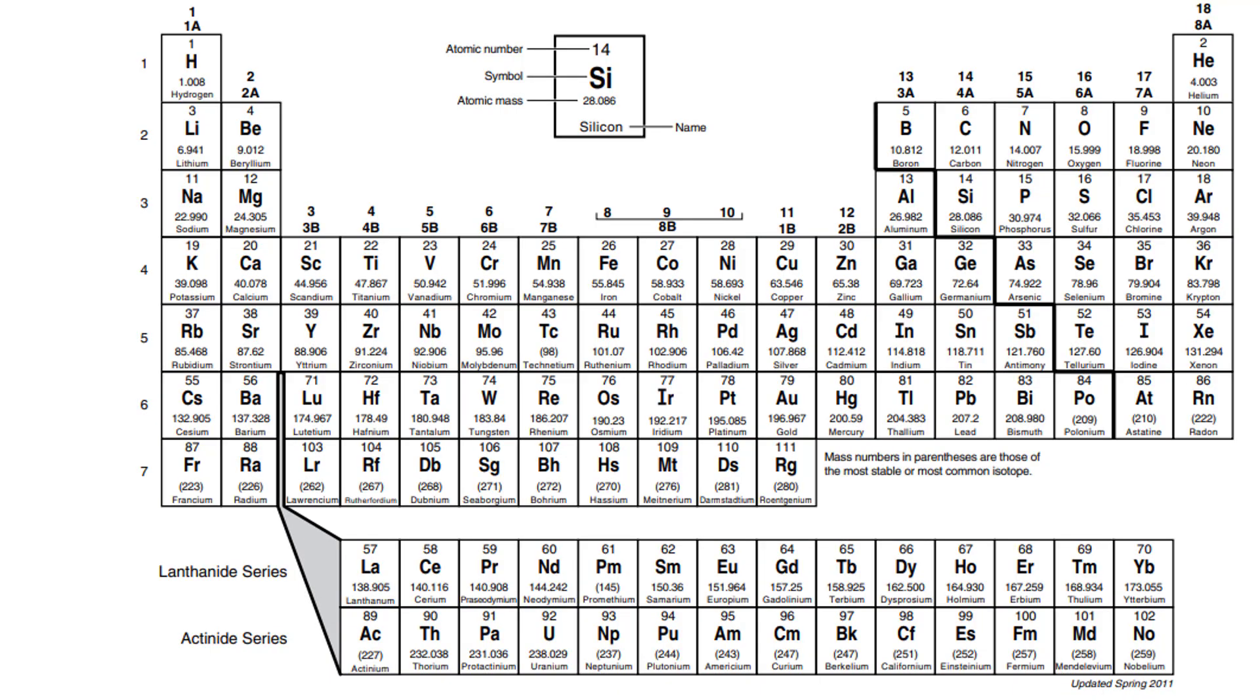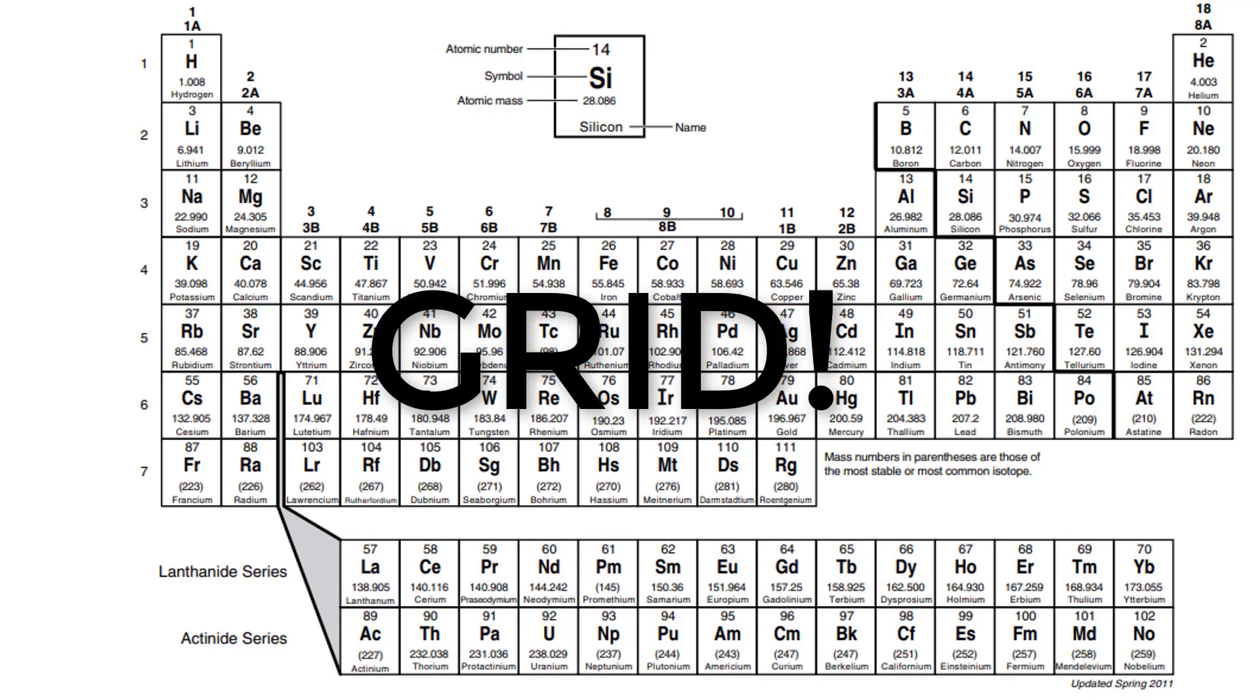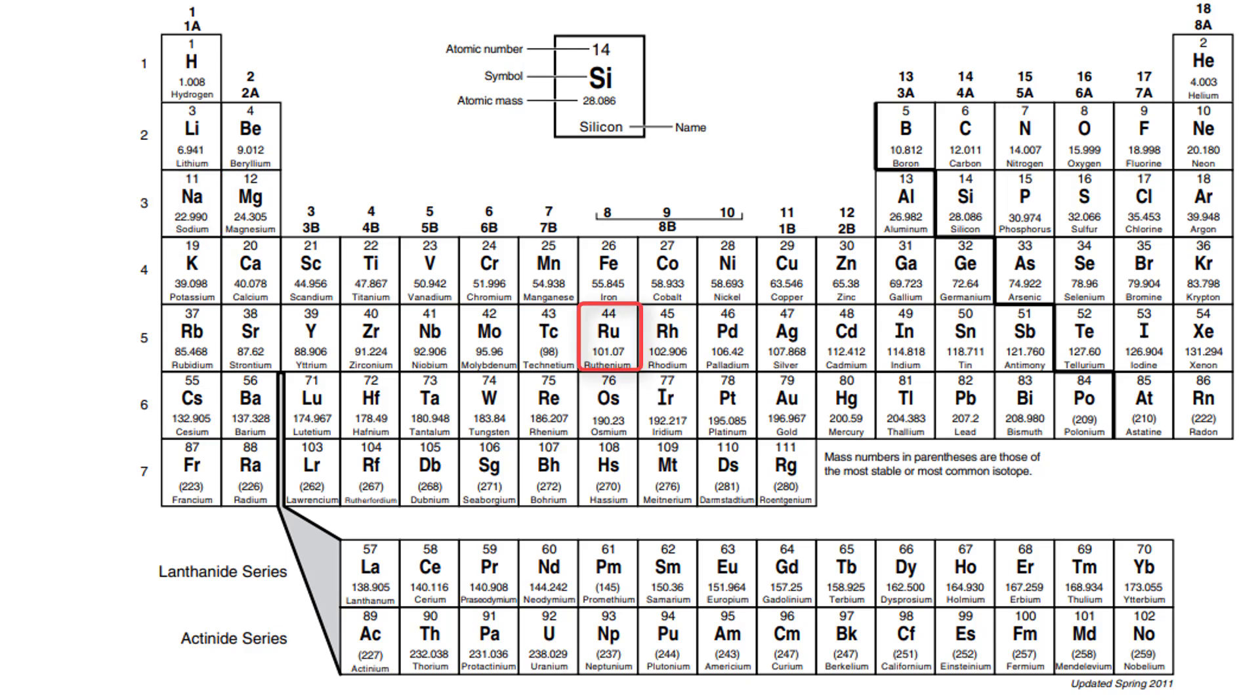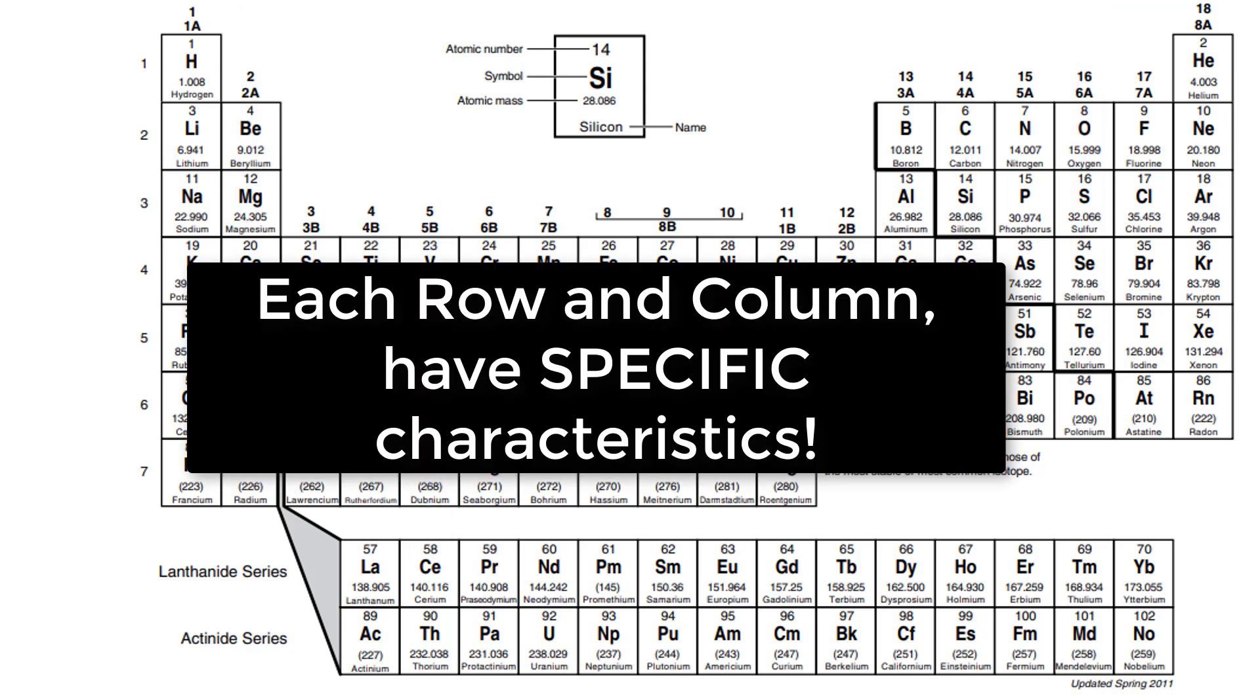The periodic table is organized like a big grid. Each element is placed in a specific location because of its atomic structure. As with any grid, the periodic table has rows, left to right, and columns, up and down. Each row and column have specific characteristics.